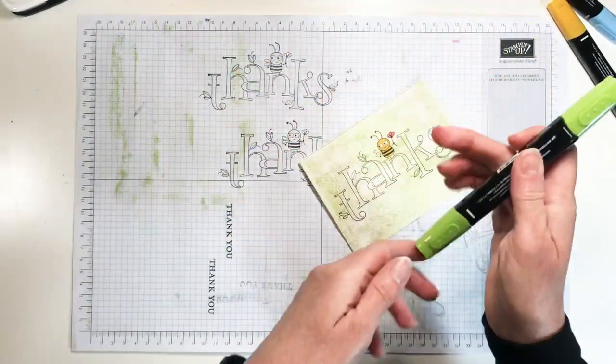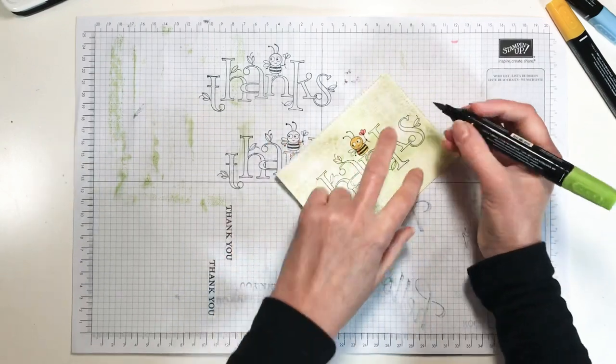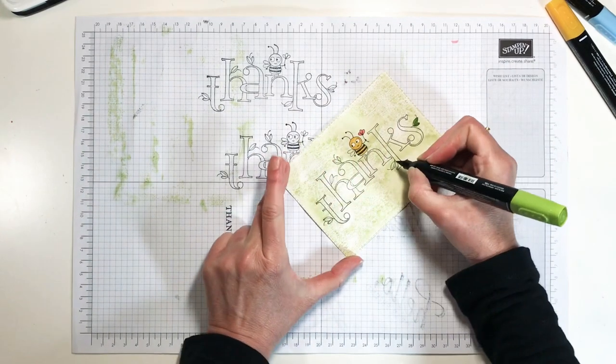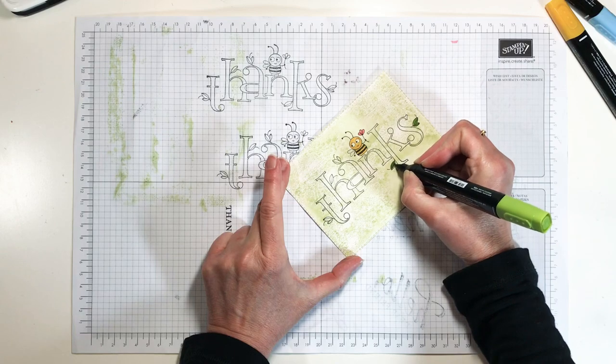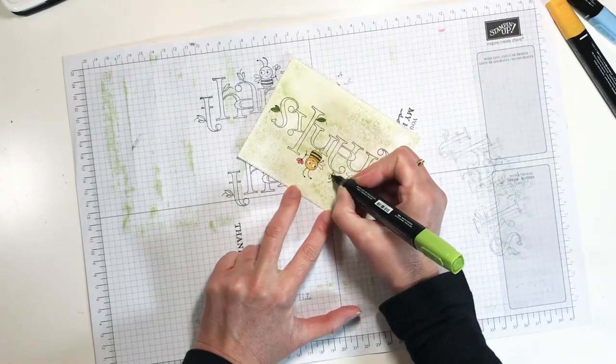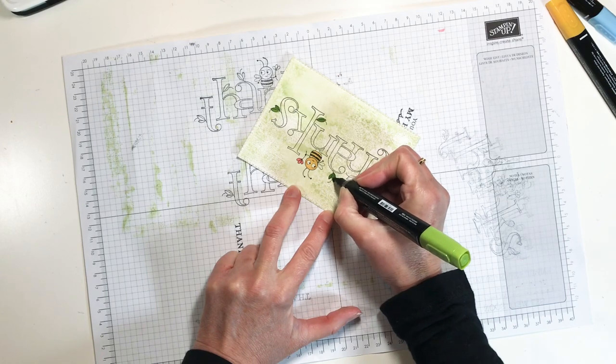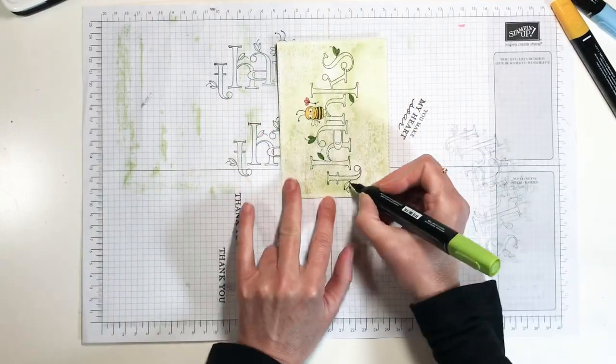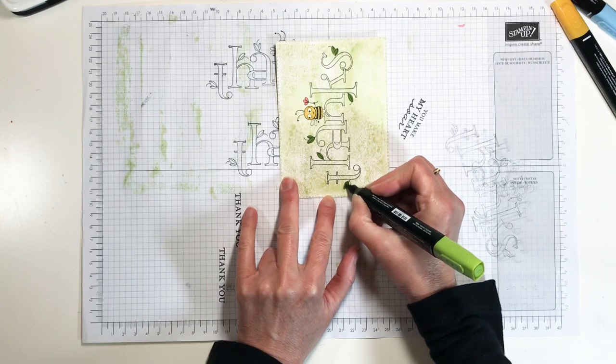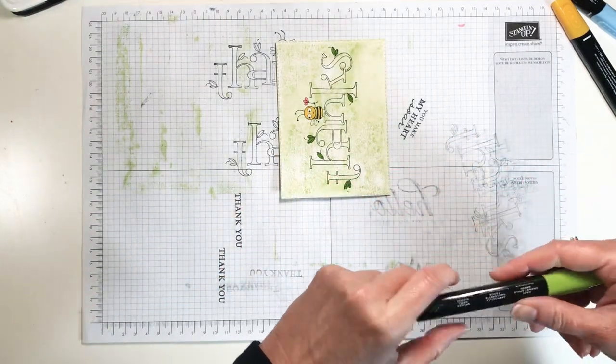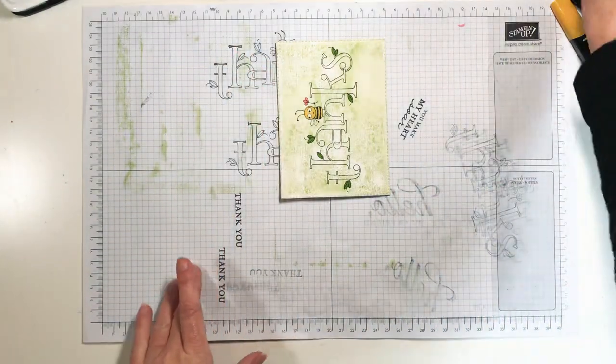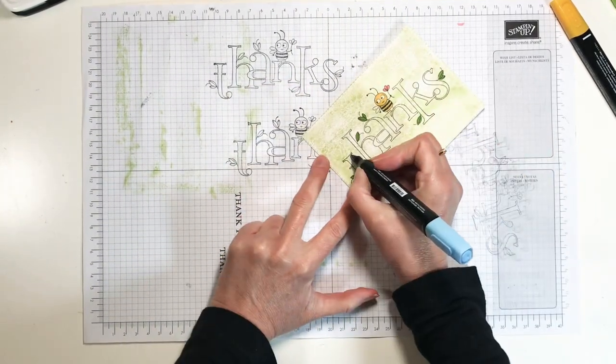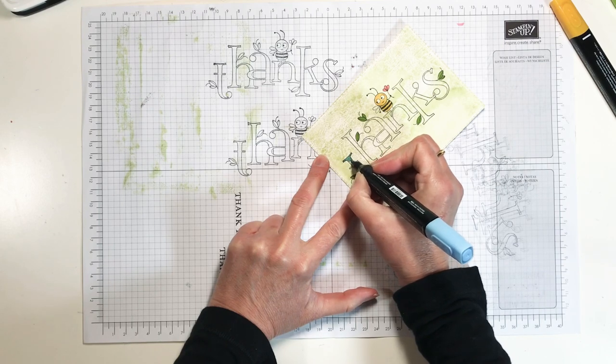Then for my leaves on here I have Dark Granny Apple Green. I love the blends because you can color in any direction which if you're not a serious colorer like I am I love to color but I'm not really crazy and meticulous about it. Then being able to turn your paper for me and color in a different direction really helps. And then we're just going to add on some Balmy Blue to all the letters.